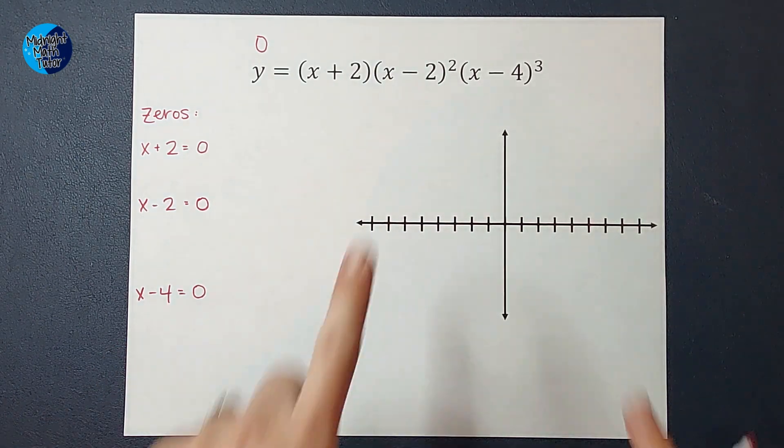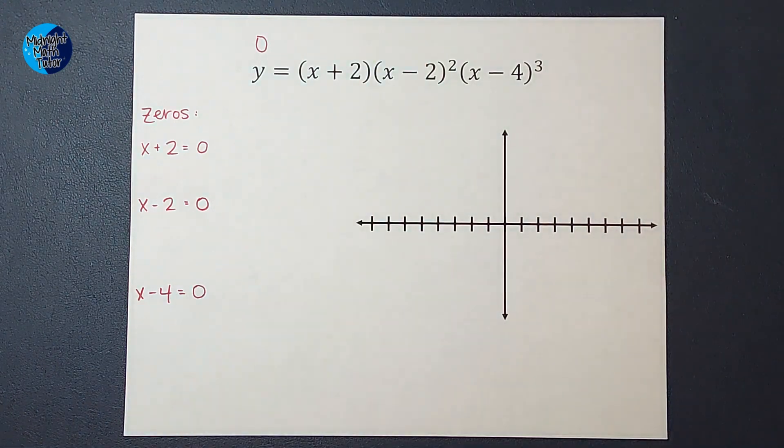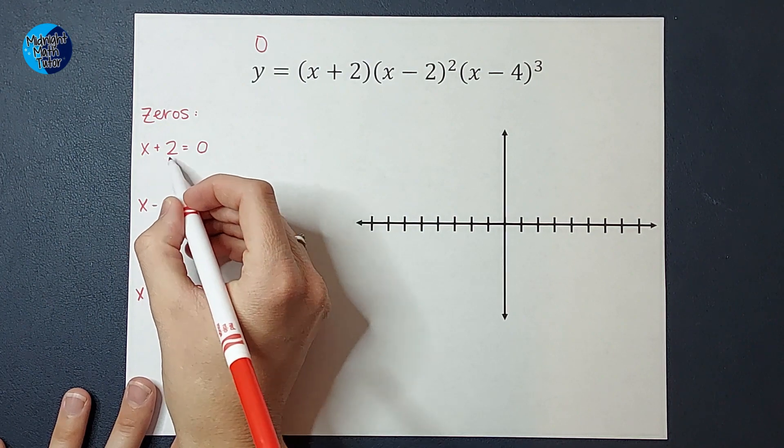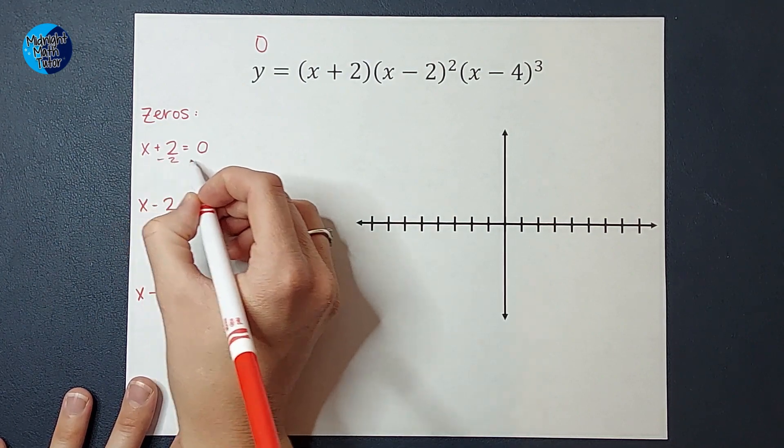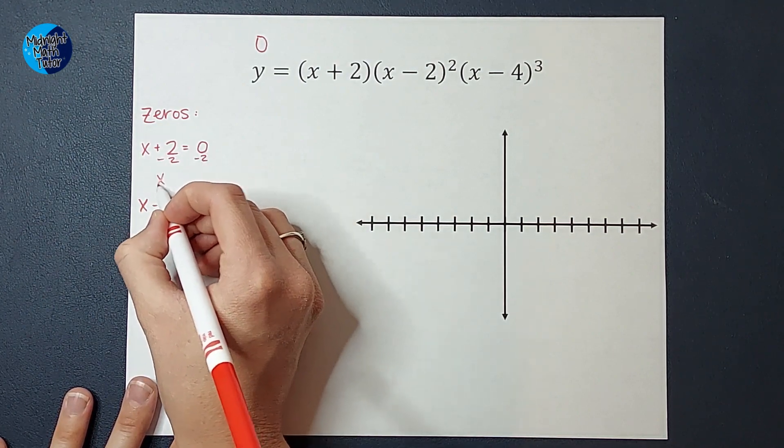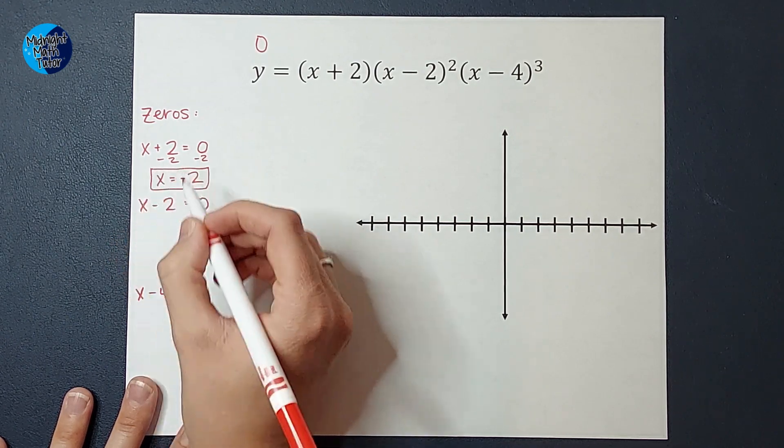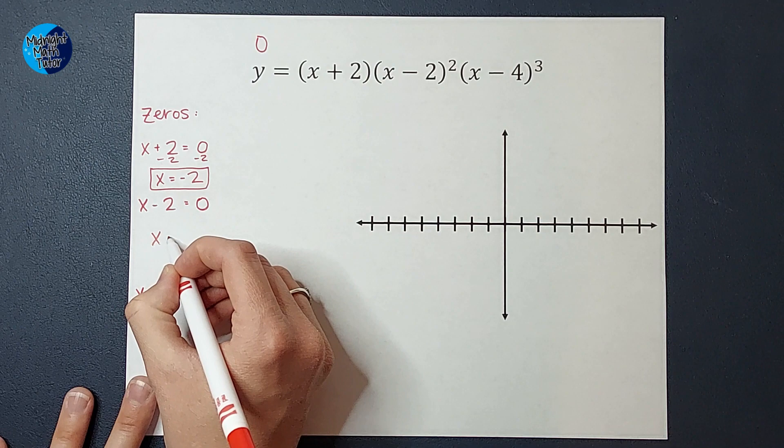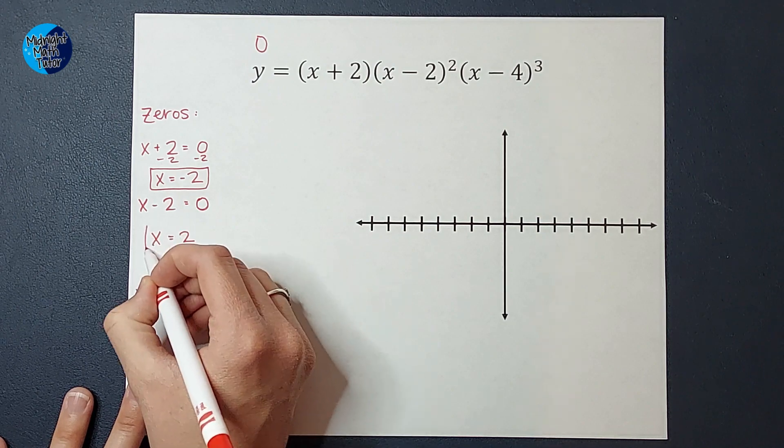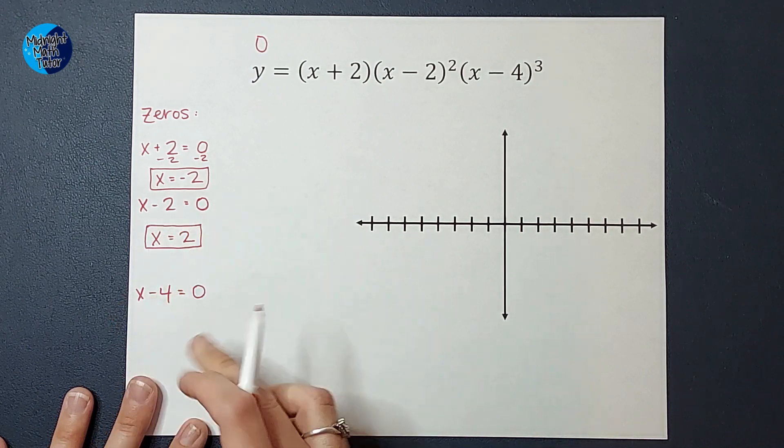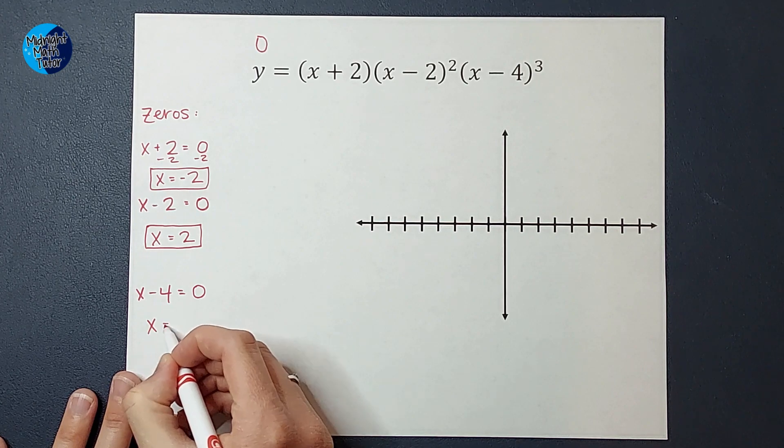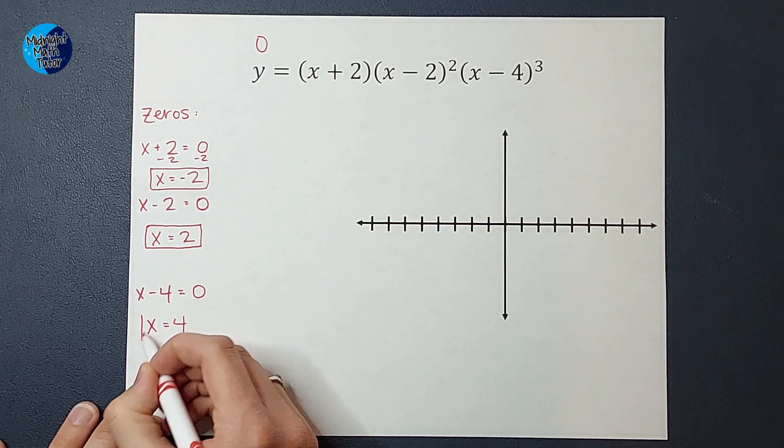Now I know these are squared and cubed. We'll talk about that in just a second. So now I'm just going to solve for x. On this one, I would subtract two from both sides and get x equals negative two. On this one, I would add two to both sides and get x equals two. And on this one, I would add four to both sides and get x equals four.